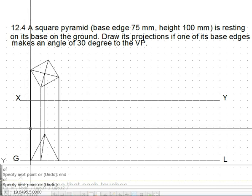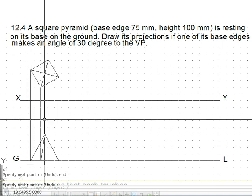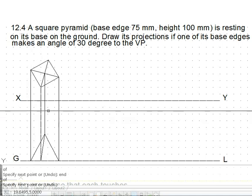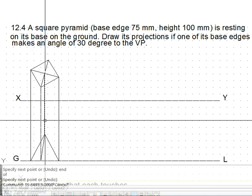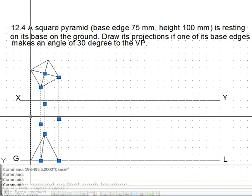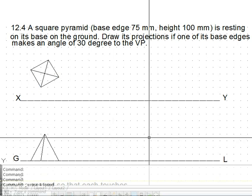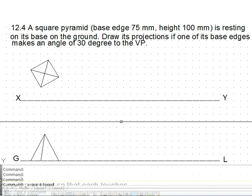We can remove the construction lines. Select the construction lines, there are construction lines, we remove them. Now the visible portion is ready with us.